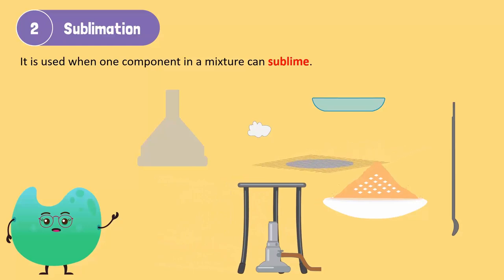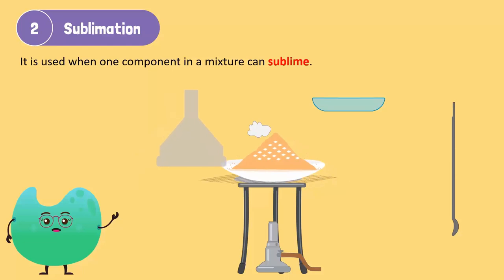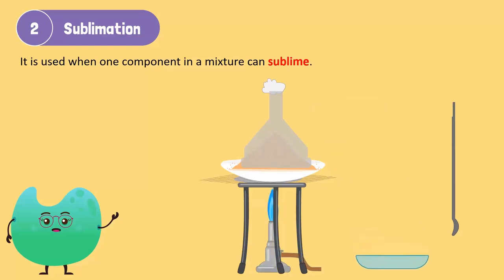Place the china dish on a wire gauze that is placed over a tripod stand. Cover the china dish with an inverted glass funnel and plug in a little cotton at the opening of the stem of the funnel to collect the fumes of the sublimating substance. On heating the mixture in the china dish, white fumes evolve and rise inside the funnel.